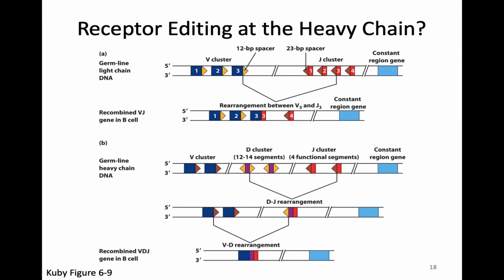You might wonder whether receptor editing is possible at the heavy chain. In fact, receptor editing is not possible at the heavy chain. When we make the VDJ rearrangement of the heavy chain, we delete all of the J segments — first the downstream J segments when we put D with J, then all the upstream D segments when we put V with DJ. In the end, there are no more Ds to allow further rearrangement. There may be some leftover Vs and Js, but those Vs and Js have the same RSS and cannot be combined in VDJ recombination. So receptor editing is only possible at the light chain.